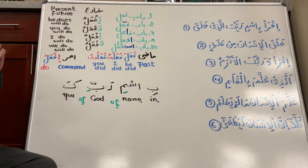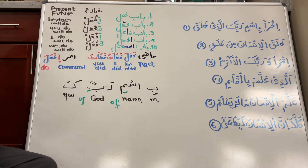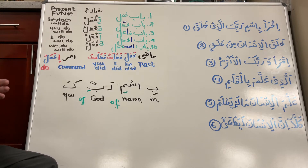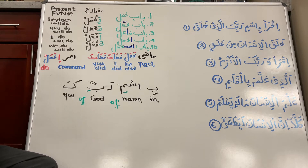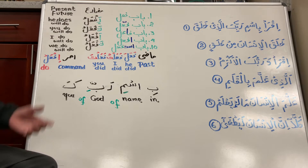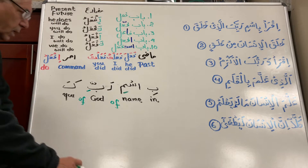So: iqra — recite — bismillahi rabbika — in the name of your Lord or of your God. The first recipient, Prophet sallallahu alayhi wa sallam, is being instructed by Allah subhanahu wa ta'ala through Jibreel: recite. And the instruction coming right after is that whatever you recite, first say the name of Allah, the name of your Lord.